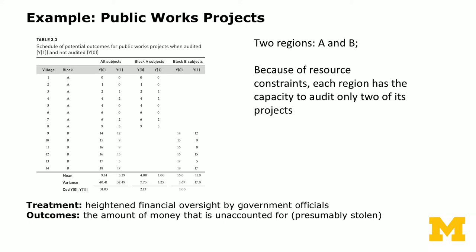Looking at the table, the first two columns cover all subjects, then block A subjects, and the last two columns are block B subjects. By eyeballing the data, you can see the outcome — the amount of money stolen — is on average much higher in block B compared to block A. Block A subjects are very similar to each other, as are block B subjects, but there is a fair amount of difference between block A and block B.